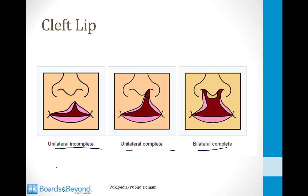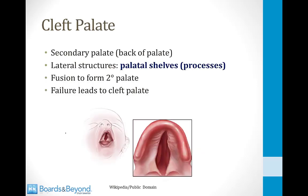These conditions are usually treated with surgery. A cleft palate, which often goes together with a cleft lip, is a problem of the secondary palate — the back of the roof of the mouth. There are two lateral structures in the embryo called the palatal shelves, sometimes called the palatal processes. These must fuse to form the secondary palate, and if they do not form normally, this will lead to a cleft palate.